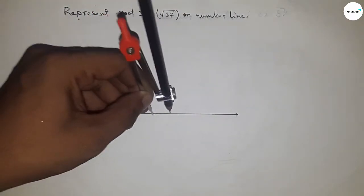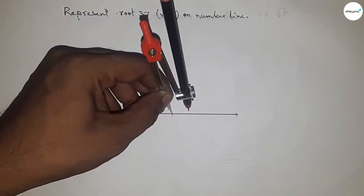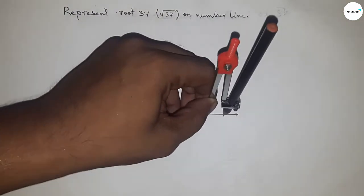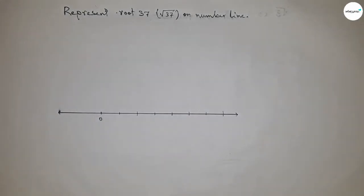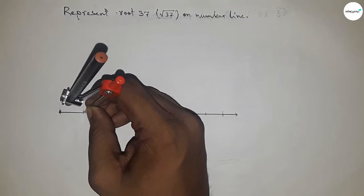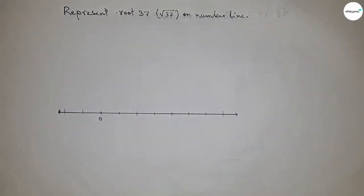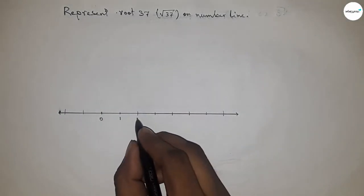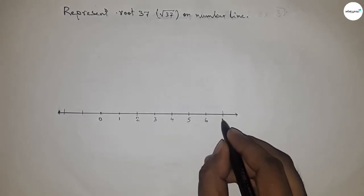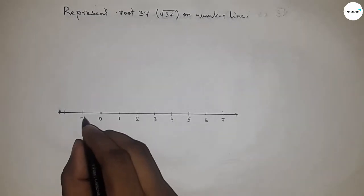Mark the lines in this way. This length is called unit length, or one unit length, and all lengths are equal. So we have 1, 2, 3, 4, 5, 6, 7, and so on. On this side: -1, -2, and so on.